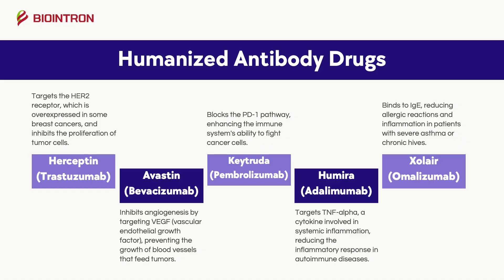Here are a few examples of approved humanized antibody drugs for human treatment. Herceptin, or trastuzumab, targets the HER2 receptor, which is overexpressed in some breast cancers, and inhibits the proliferation of tumor cells.